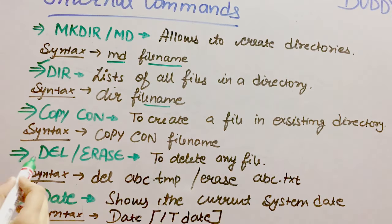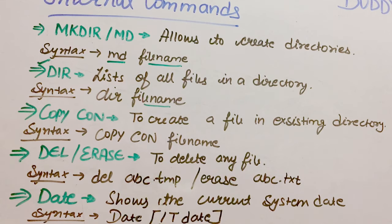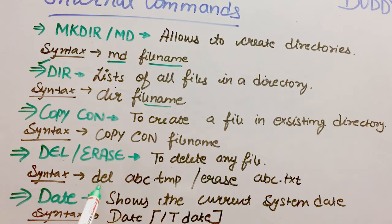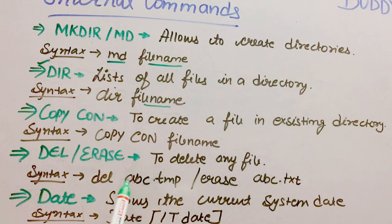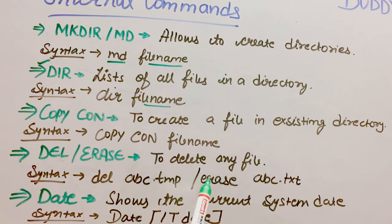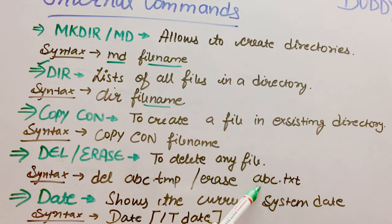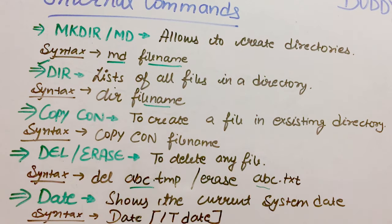Next is your DEL or ERASE. It is used to delete any file. You just have to write DEL and your file's name like abc.tmp, or ERASE abc.txt, which is your file name.